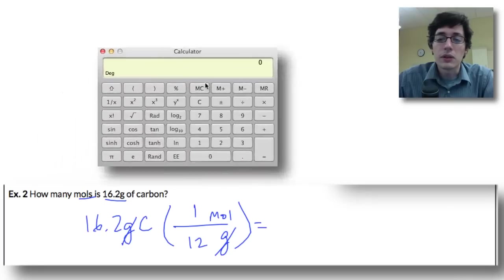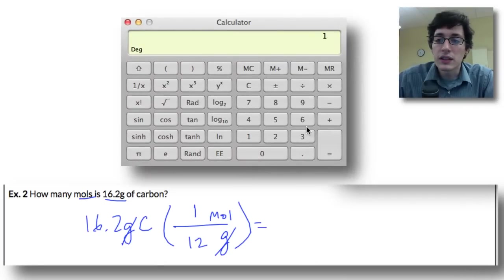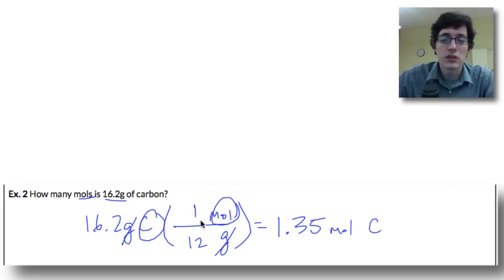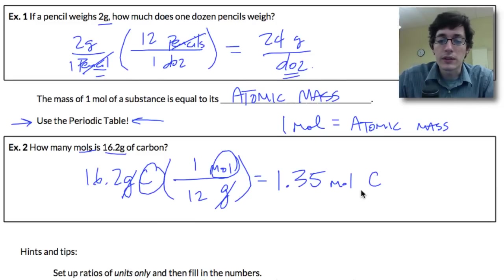And this is where our calculator comes in. We need our calculator. So we do 16.2 times 1 gives me 16.2, now we divide that by 12, and that gives me 1.35. So 1.35, the only units we have left are moles of carbon. Carbon has not changed, so these units carry through, and this is your final answer.